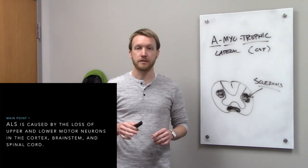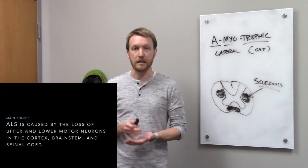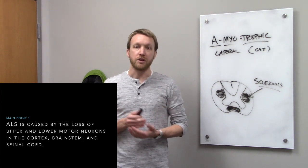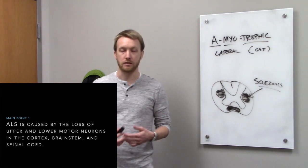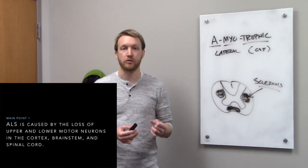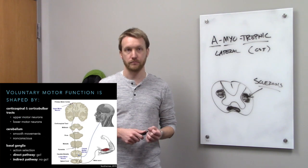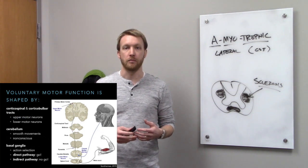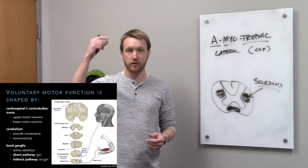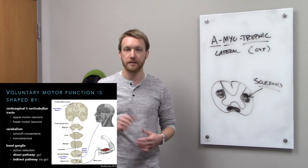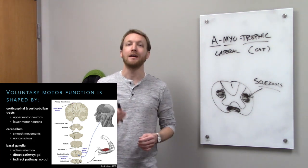In ALS, we see degeneration of motor neurons, both upper and lower. Which population gets affected first creates different subtypes of ALS, but in all cases we see degeneration of motor neurons throughout the central nervous system. All of our movements are carried out by motor neurons. Upper motor neurons are found in the cortex and brain stem; lower motor neurons are found in the brain stem and spinal cord.